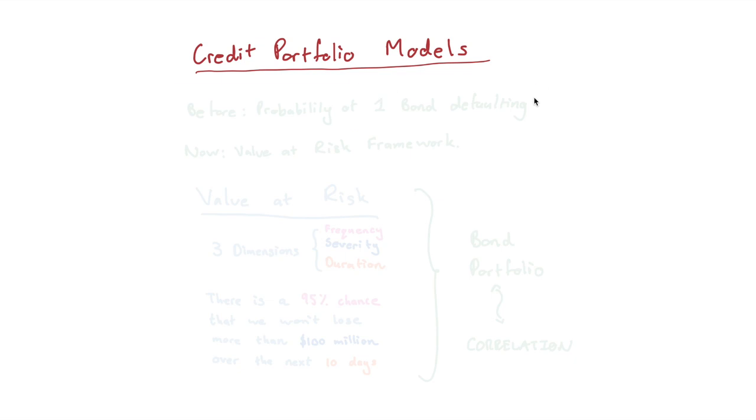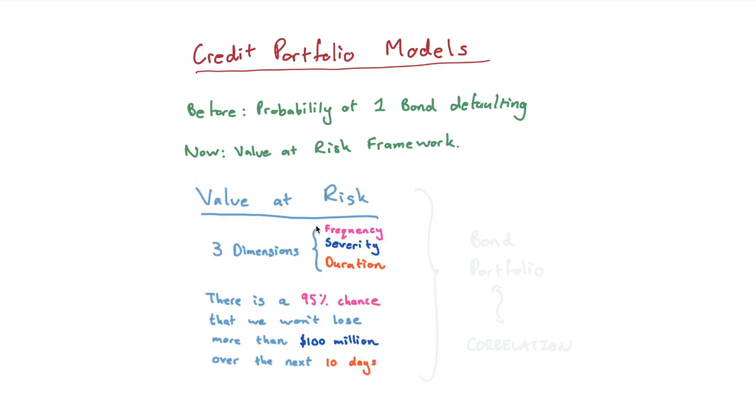Just to manage expectations, we are giving just a quick overview here. Before, the previous models that we've looked at, specifically the structural models of Merton or the migration models of Yarrow, we were looking at the probability of a single bond defaulting. What we want to do now is consider a portfolio of bonds and we will be using the value at risk framework. Value at risk essentially is a statement about risk and it captures three dimensions of risk: the frequency, the severity, and the duration of the total risk portfolio.